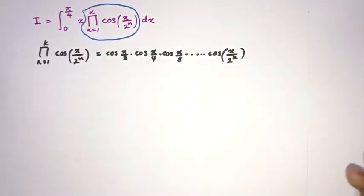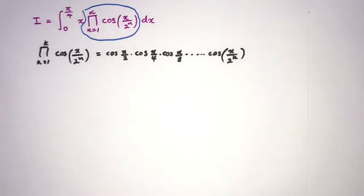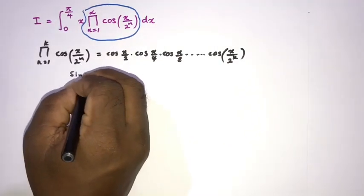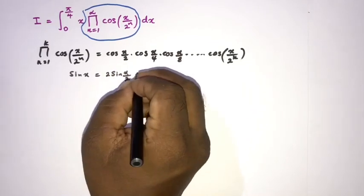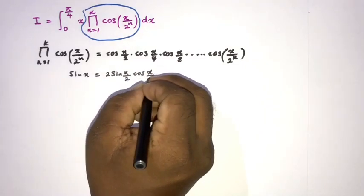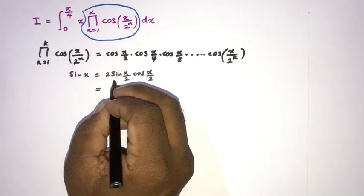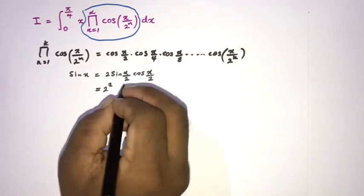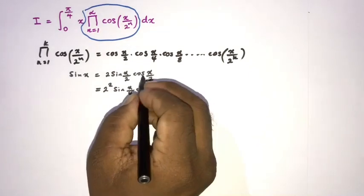Now, how to evaluate this product. We begin with sine of x. We know sine of x equals, by the double angle formula, 2 times sine of x over 2 times cosine of x over 2. Applying the double angle formula again, we get 2 squared times sine of x over 4 times cosine of x over 4, times cosine of x over 2.